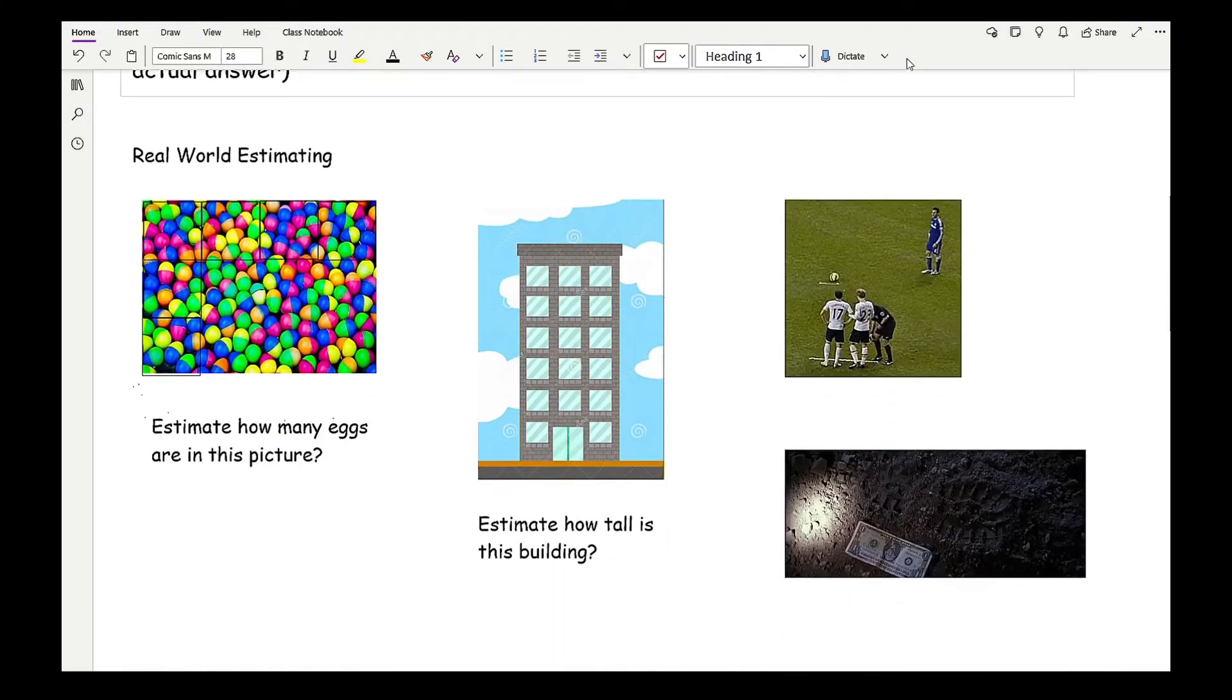Now the next thing we move on to is real-life estimating. These questions are becoming a little more prominent in exams, particularly on foundation papers, where they give you a diagram and you need to work out an estimation of how many or how long or how tall something is. For example, as you can see in this first picture, it says guess how many eggs there are in this picture. One way of having an educated guess is to split the picture up into a small countable scale. So here I've got countable squares that I've done.